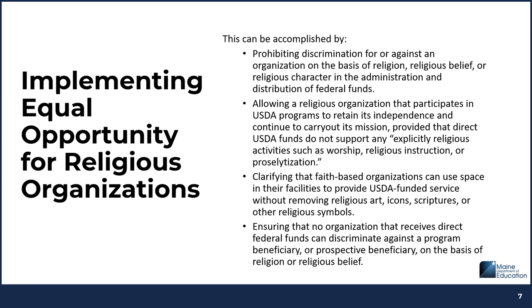It is important that civil rights includes implementing equal opportunity for religious organizations. This can be accomplished by prohibiting discrimination for or against an organization on the basis of religion, religious belief, or religious character in the administration and distribution of federal funds. Allowing a religious organization that participates in USDA programs to retain its independence and continue to carry out its mission, provided that direct USDA funds do not support any explicitly religious activities such as worship, religious instruction, or proselytization. Clarifying that faith-based organizations can use space in their facilities to provide USDA-funded service without removing religious art, icons, scriptures, or other religious symbols. Ensuring that no organization that receives direct federal funds can discriminate against a program beneficiary or prospective beneficiary on the basis of religion or religious belief.